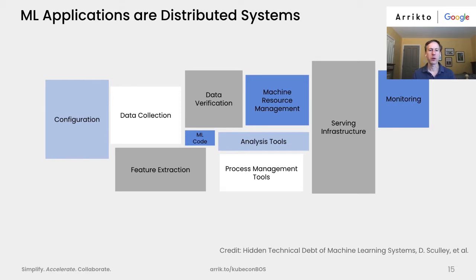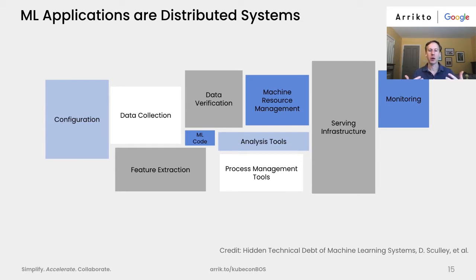ML code is one small part of the process. This diagram is from a famous paper about hidden technical debt in machine learning systems. When your code goes into production, it's inevitable — you will need to think about monitoring, logging, testing, managing resources, and ensuring a reproducible environment. By working with the infrastructure we're discussing today, you're able to leverage it and focus on the data science, as well as building a process and pipeline that matches the goals of your business or project.